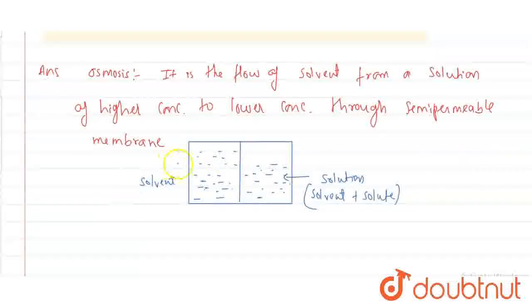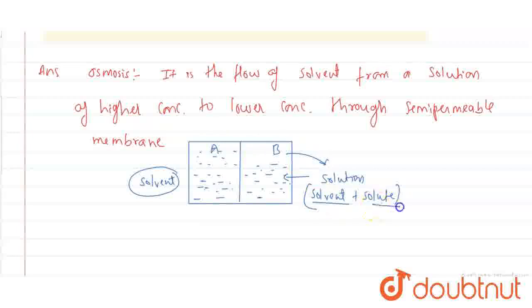Let us understand from an example. Suppose on the A side we have only solvent, and on the B side we have a solution which has solvent plus solute. So solvent concentration is high here and low on this side. Solvent will move through this semi-permeable membrane from A to B, from higher concentration to lower concentration, and this movement is called osmosis.